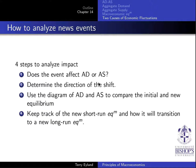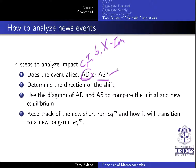Once we're no longer in long-run equilibrium, we need to find a way to move back. When going through this process, listen to a news event and ask yourself: does this event affect aggregate demand or aggregate supply? If it's something that changed consumption, investment, government spending, or exports or imports, it's going to be the AD curve. If it shifted production costs such as oil or other things related to production, it's the aggregate supply curve.